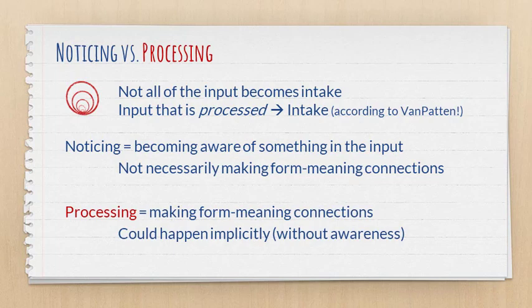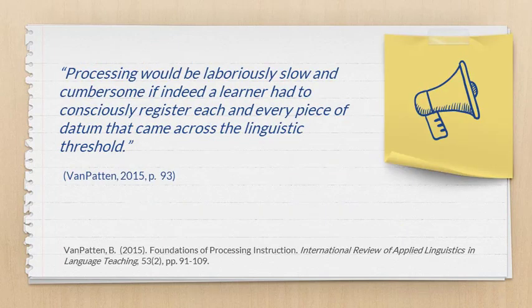Now processing, on the other hand, is about making form meaning connections. And processing could happen implicitly, meaning without awareness. Van Patten emphasizes this point by saying that processing would be laboriously slow and cumbersome if indeed a learner had to consciously register each and every piece of datum that came across the linguistic threshold.